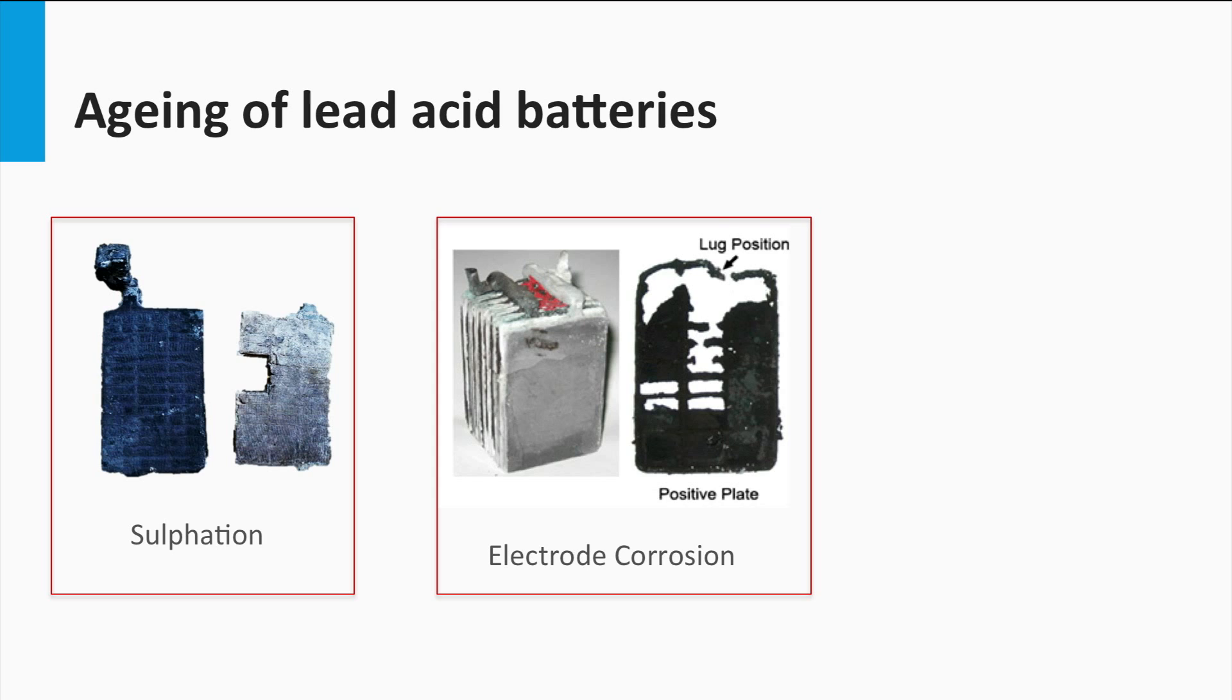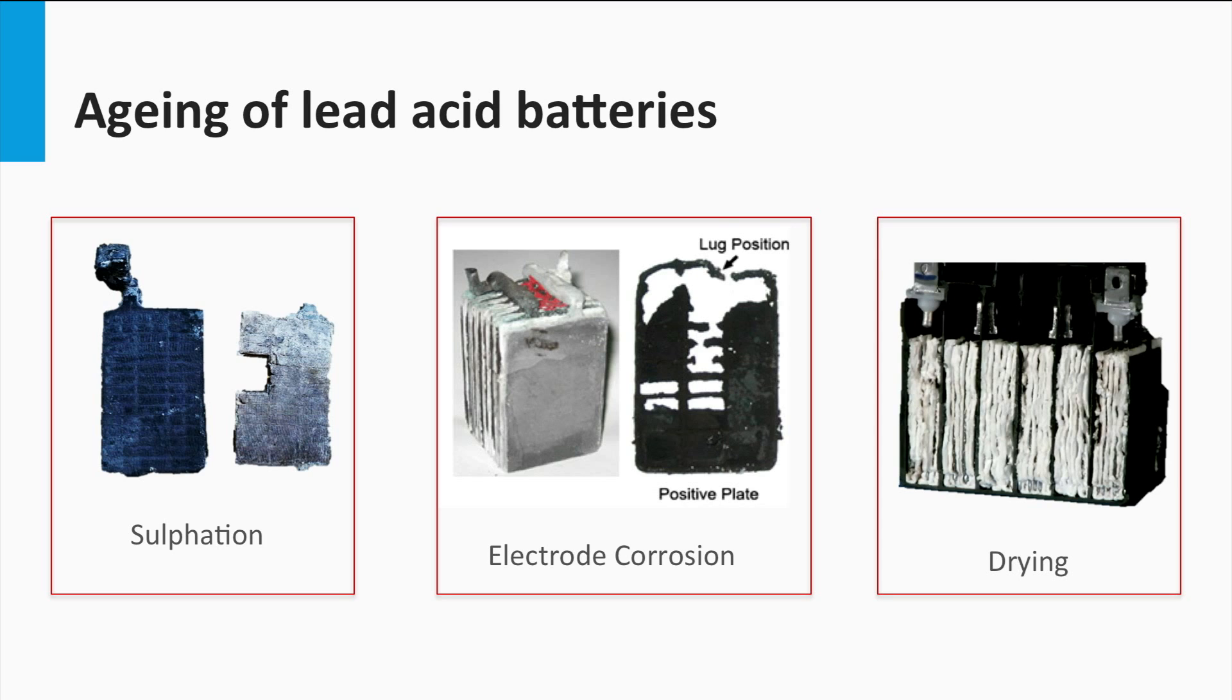Corrosion of lead grid at the electrode is another common aging mechanism. This leads to increased grid resistance due to high positive potentials. Another cause is the drying out of electrolyte. Gassing can occur at high charging voltages resulting in loss of water. This should be replaced by timely addition of distilled water. Otherwise it dries out and the battery no longer functions.